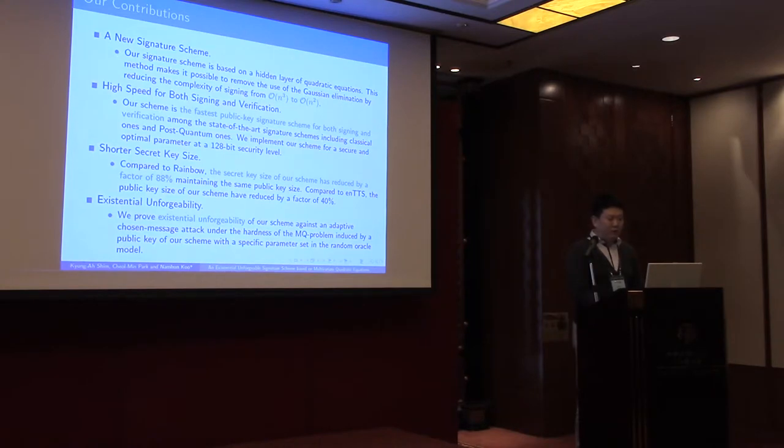This is a summary of our contributions. We proposed a new MQ based signature scheme based on a hidden layer of quadratic equations. This method makes it possible to remove the use of the Gaussian elimination. Our scheme is the fastest public key signature scheme for both signing and verification among the state-of-the-art signature schemes, including classic ones and post-quantum ones. Compared to other MQ signature schemes, our scheme has shorter key sizes. And we prove existential substantial unforgeability of our scheme.